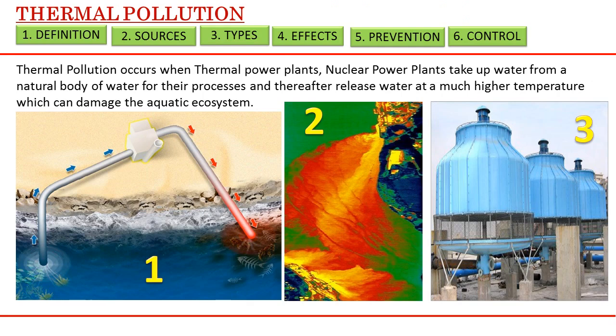We shall now look briefly into thermal pollution. This occurs when thermal power plants, nuclear power plants, etc. take up water from a natural body of water for their processes and thereafter release water at a much higher temperature, which can damage the aquatic ecosystem. This creates heat shock, an increased rate of chemical reactivity, and even eutrophication in some cases.